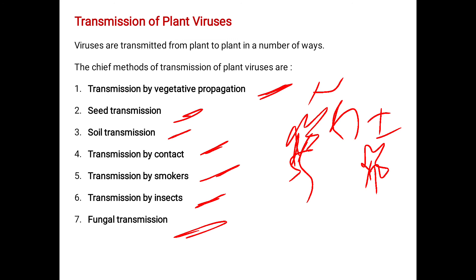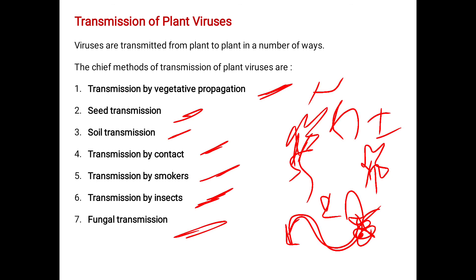In transmission by smokers, the tobacco leaves being used must be checked whether they are free from infection. If infected, there is a possibility of spreading the infection. In transmission by insects during pollination, if an insect sits on an infected plant and then moves to a normal plant, it carries infected spores that germinate and cause disease in the healthy plant.